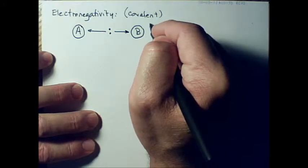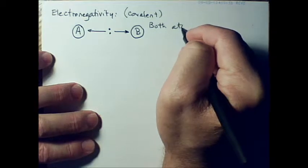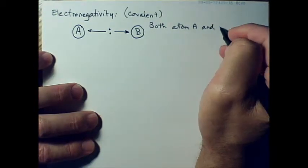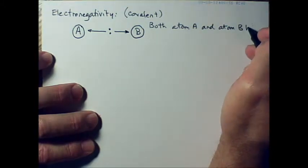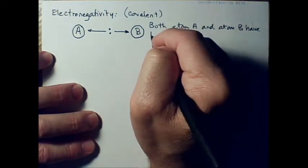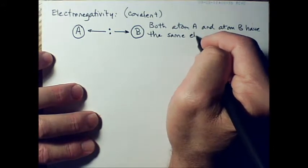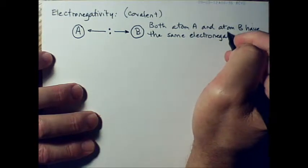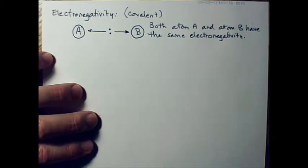Well, if they're sharing them equally or pretty close to equally, then they both, A and B, both atom A and atom B have the same electronegativity. So they're sharing them about the same, they both have the same electronegativity.